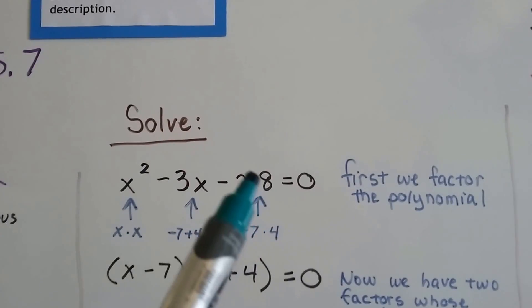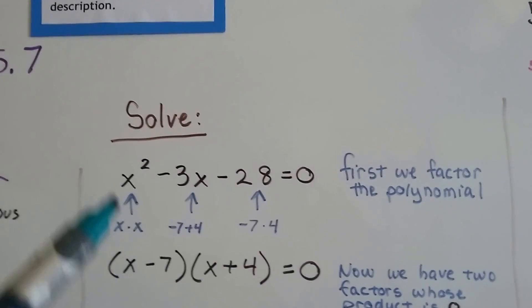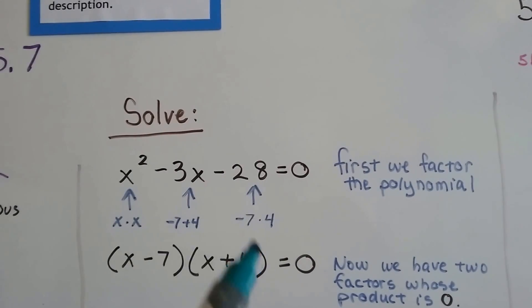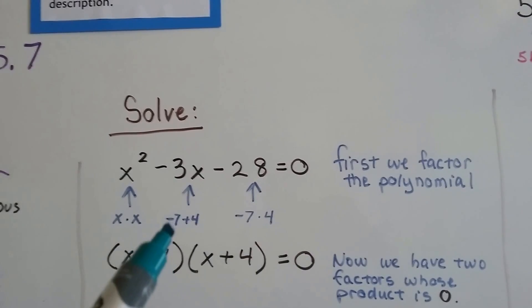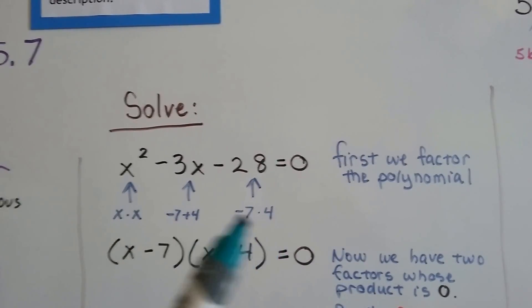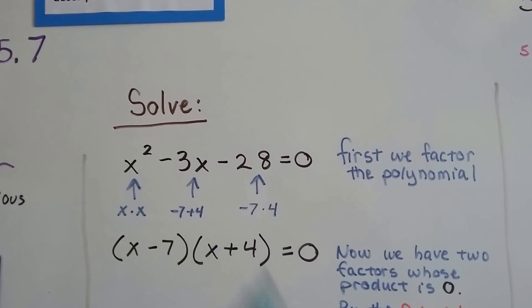It's not a square. We don't have a square on this side, do we? This is x times x. This is -7 times 4 or -4 times positive 7. And this would be them added together. A -7 plus 4 would get us -3, wouldn't it? So we know it's the -7.